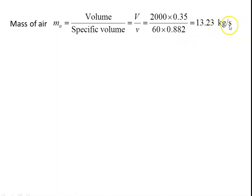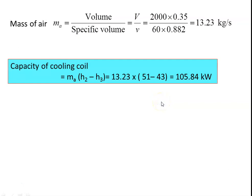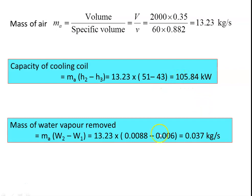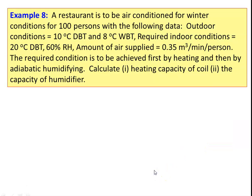Mass of air = 2000 × 0.35 / 60 / 0.882 = 13.23 kg/s, which is the total quantity of air circulated. Capacity of cooling coil = ma × (h2 − h3) = 13.23 × (51 − 43) = 105.84 kilowatts. Mass of water vapor removed = ma × (w2 − w1) = 13.23 × (0.008 − 0.006) = 0.037 kg/s.